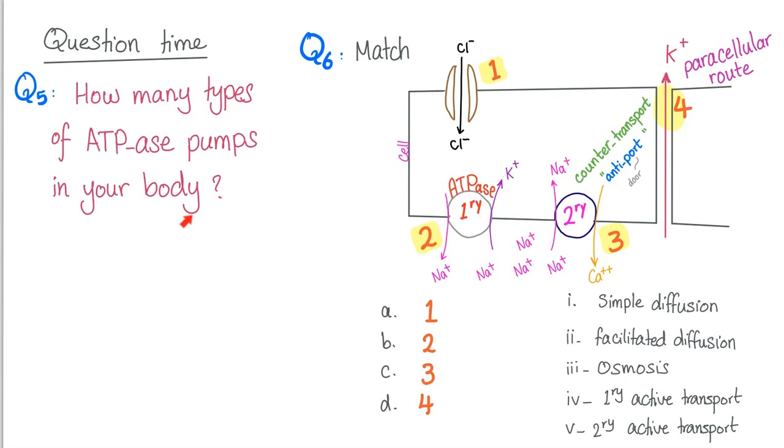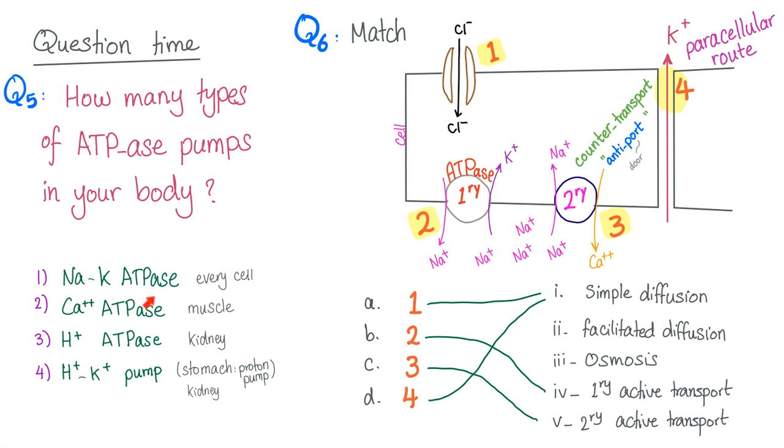How many types of ATPase pump do you have? And match the number here with the type of transport. Answers. You have four types of ATPase in your body. Sodium potassium ATPase in every single cell, calcium ATPase in muscle cells, hydrogen ATPase in the kidney. Hydrogen potassium ATPase is found in two locations: number one in your stomach, this is the proton pump that you inhibit using proton pump inhibitors such as omeprazole, lansoprazole, etc., and this same pump is also found in the kidney.